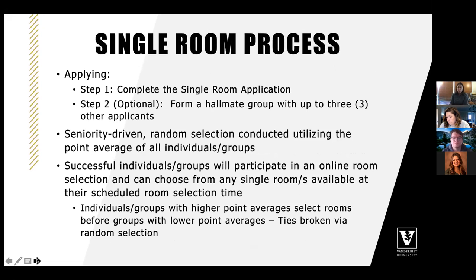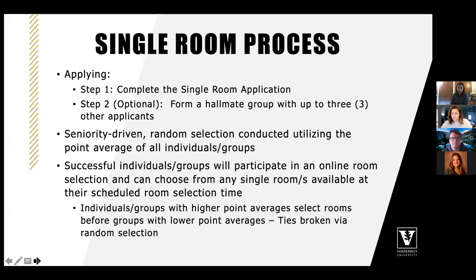Once suite and apartment processes finish, we move to the single room process. Any unassigned student is eligible. Step one is completing the single room application, and optionally forming a hallmate group with up to three other applicants — this links students so they can pick single rooms in close proximity simultaneously. We conduct a seniority-driven random selection using the point average of all individuals or groups.